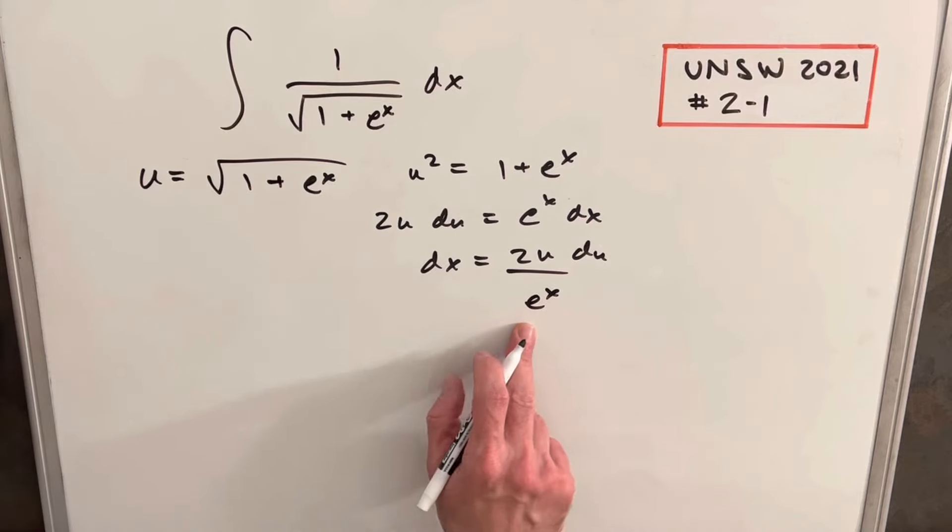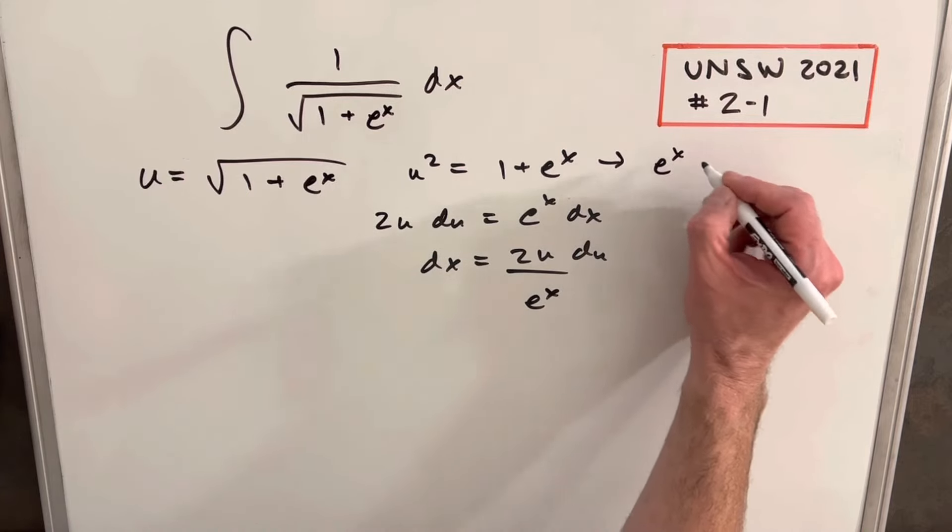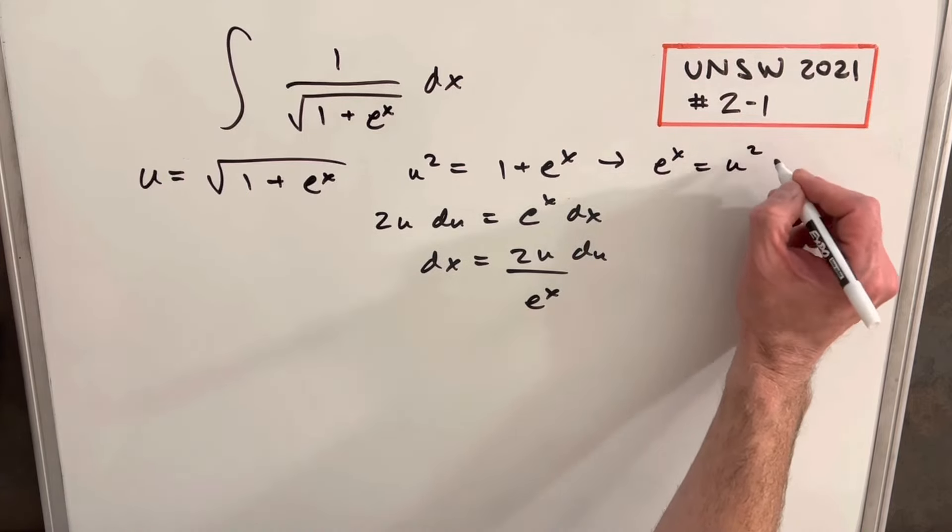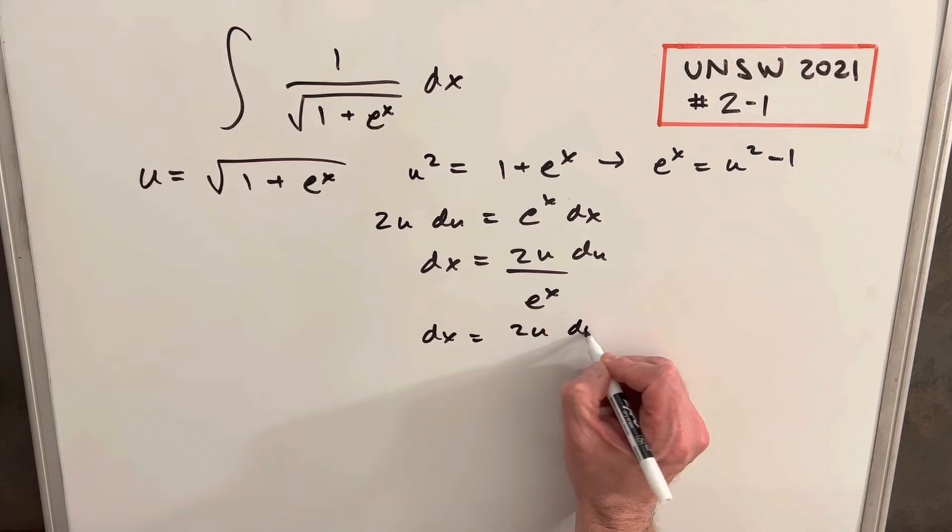Now we need e to the x in terms of u. From our earlier equation, subtracting 1 gives us e to the x equals u squared minus 1. So dx equals 2u du over u squared minus 1.